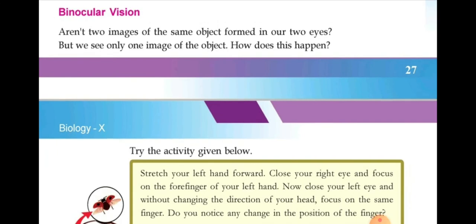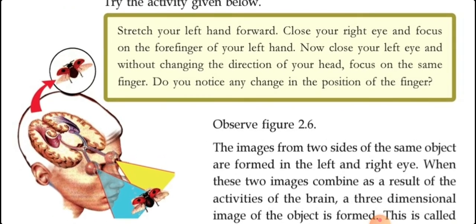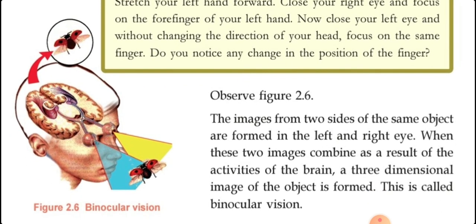What is binocular vision? Simply, when we see objects with two eyes. Look at this picture — when we see an object with two eyes, two images are actually formed. For example, a housefly being seen with two eyes — two images are passing to the brain. The brain combines those two images, and we get a three-dimensional single image of the object. That is called binocular vision.